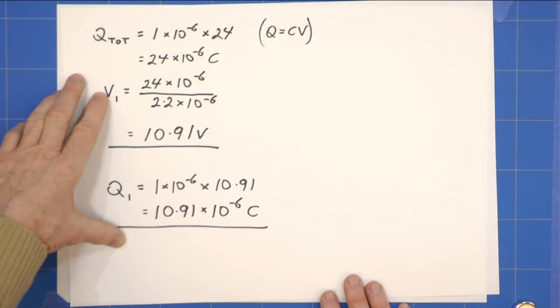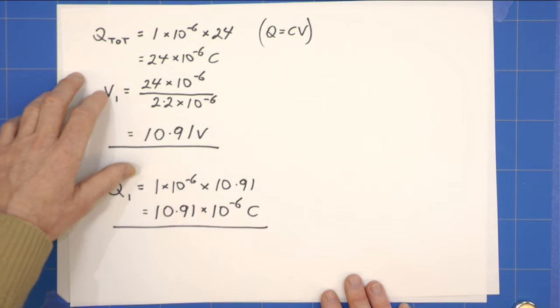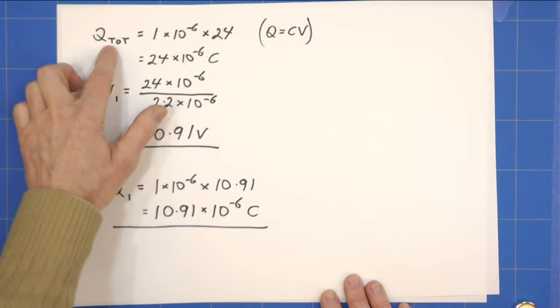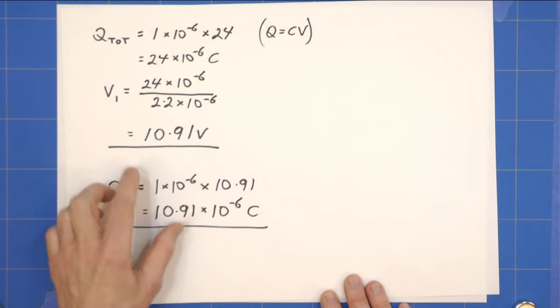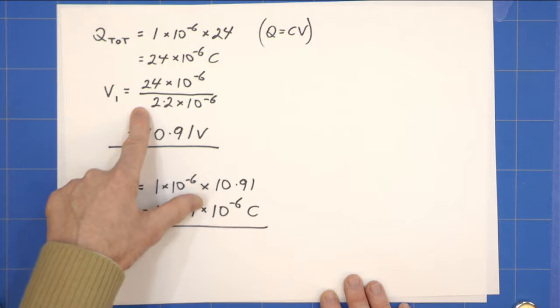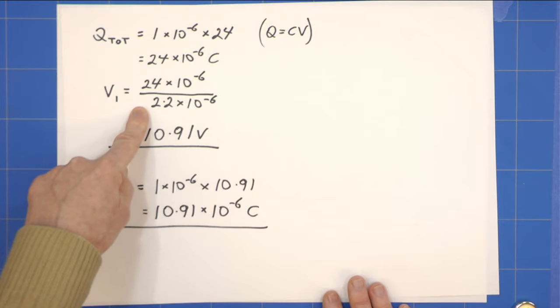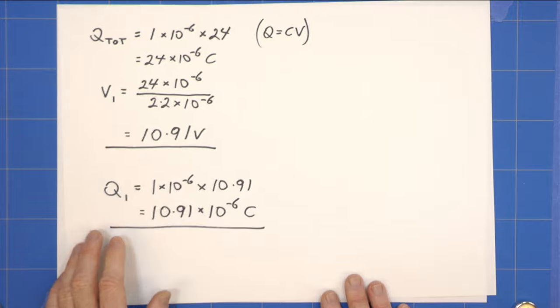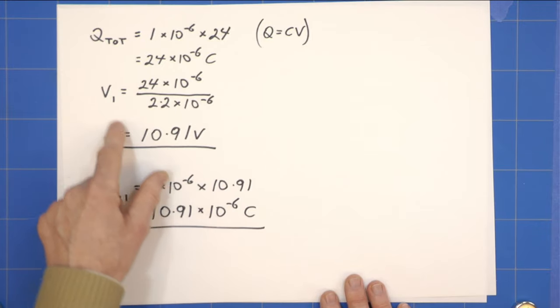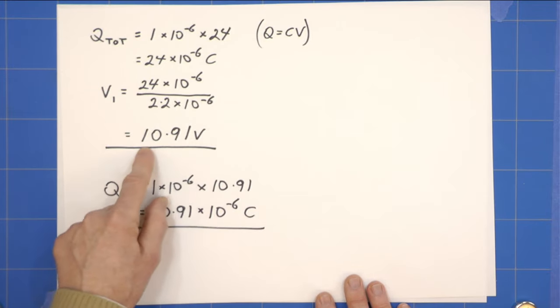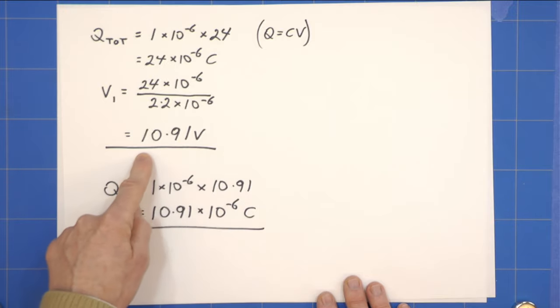The new voltage is going to be the charge which won't have changed, 24 times 10 to the minus 6 coulombs, divided by our new capacitance which we've just worked out to be 2.2 times 10 to the minus 6. That gives us a voltage V1 on capacitor 1 of 10.91 volts.